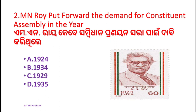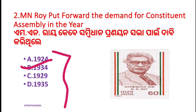Option A: 1924. Option B: 1934. Option C: 1929. Option D: 1935. The correct answer is option B, 1934.